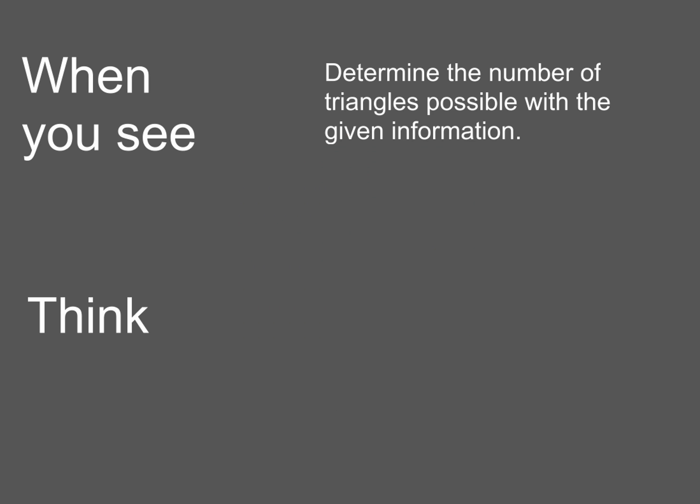Now when you see determine the number of triangles possible with the given information, what you've got to do is think to yourself, I've got to show that there are zero, one or two triangles. You don't have to solve the triangles, just go ahead and determine if they're zero, one or two. How do we do that?